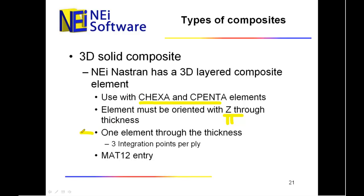One capability is that you only need one element through the thickness. People often ask: don't you recommend three, four, five, or six? For a normal non-composite 3D element, that's what we would recommend. However, when you use our laminated 3D layered composite element, internally we're creating three integration points per ply. So even though you've only got one element, if you have 30 layers, you effectively have 30 times three — or 90 integration points through the thickness — which is equivalent to 90 elements through the thickness. So one element doesn't sound like much, but it is.